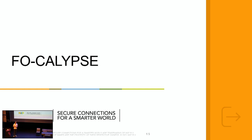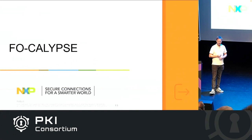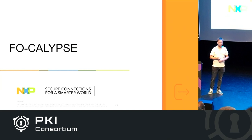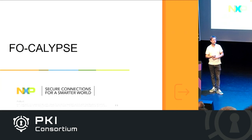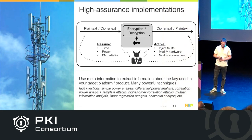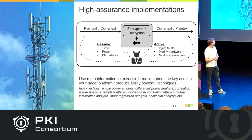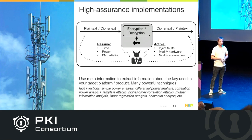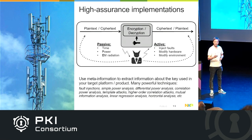Let's talk about side channels and something we call the FO-calypse — an interesting property of many post-quantum crypto schemes that has a significant impact on side-channel protection. For those not familiar: side-channel and fault attacks are passive or active attacks you can run on a device you have in your hand — for instance your phone, passport, or credit card, all of which contain a chip that might run crypto.